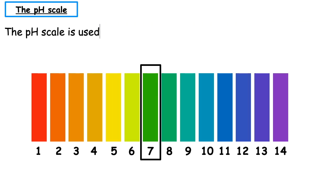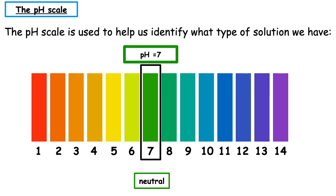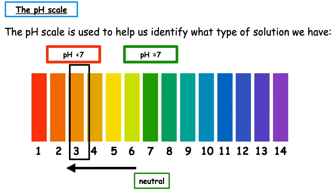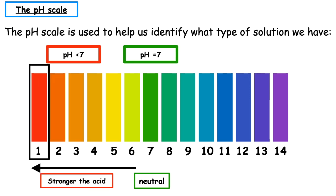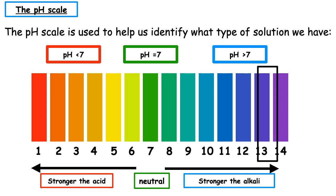The pH scale is used to help us identify what type of solution we have. When the pH is exactly equal to 7, the term we use to describe that is neutral. If we have a pH less than 7, we say that we have an acid or an acidic solution. The lower the pH, the stronger the acid. If we have a pH greater than 7, we say that it's alkaline. The stronger the alkali, the higher the pH.